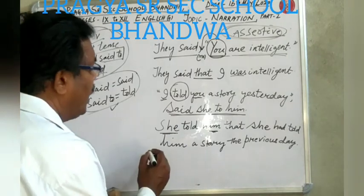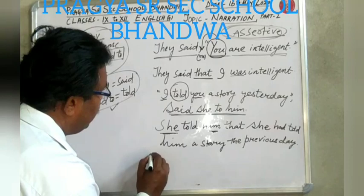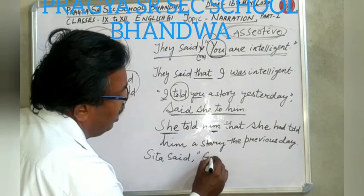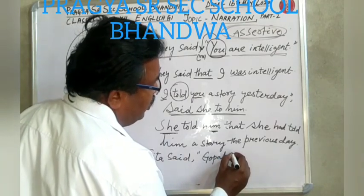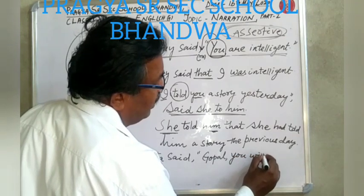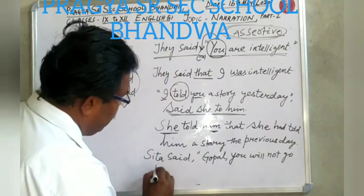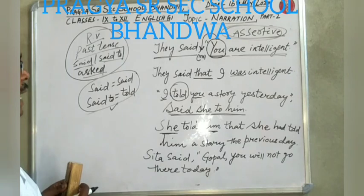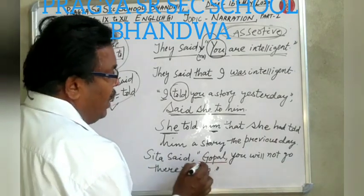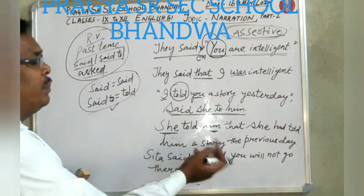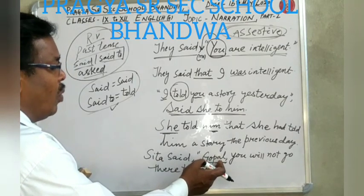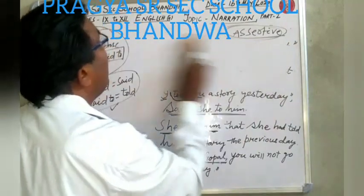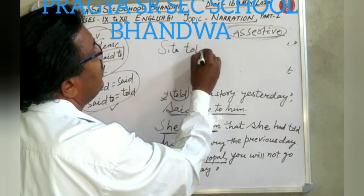Next example: Sita said to Gopal: 'You will not go there today.' Gopal is part of the introductory pattern. So we write Sita said to Gopal, and in the answer it becomes Sita told Gopal.